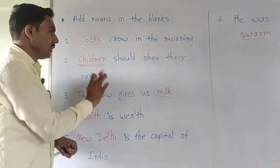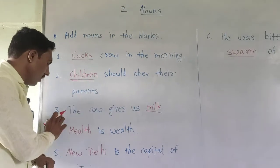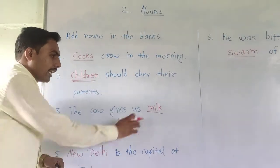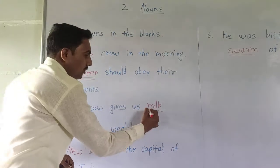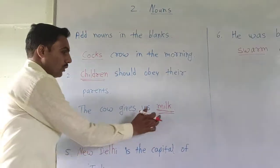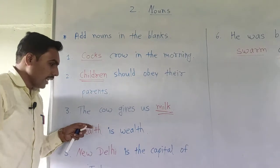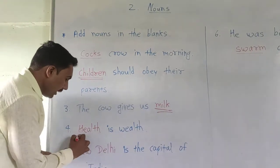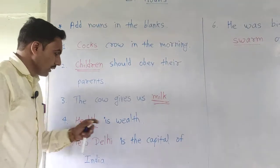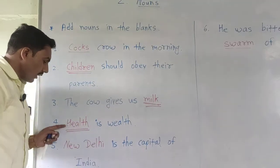We use the noun — that is 'milk'. Now the fourth example is here: dad dash is wealth. Health is wealth — arubi is sampatti. According to sentence meaning, here we use the noun 'health'.